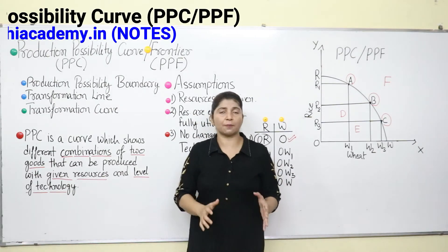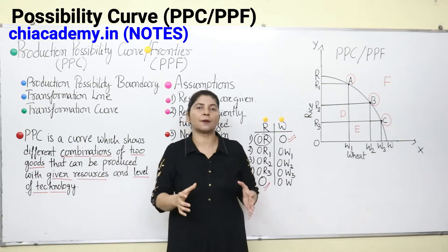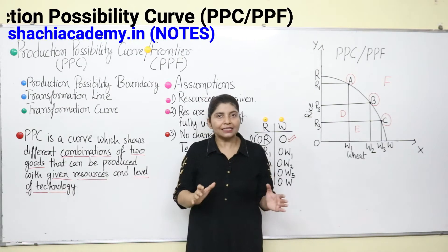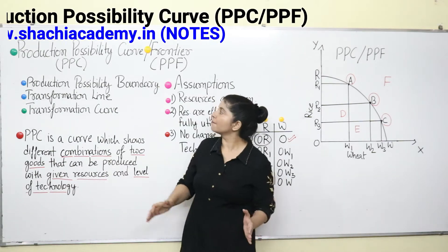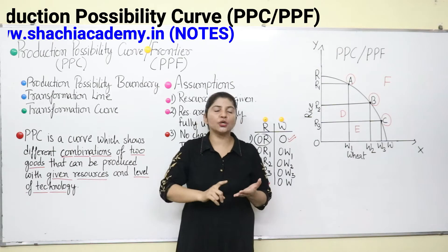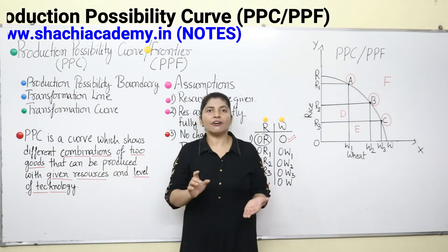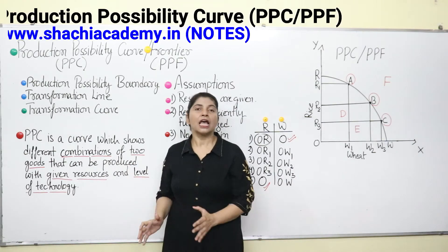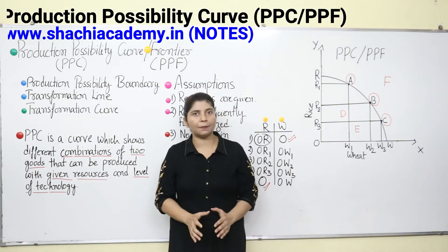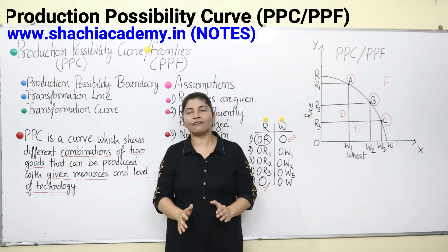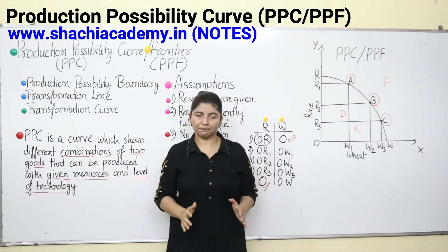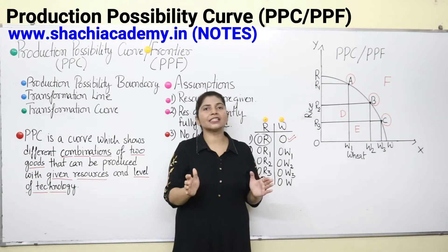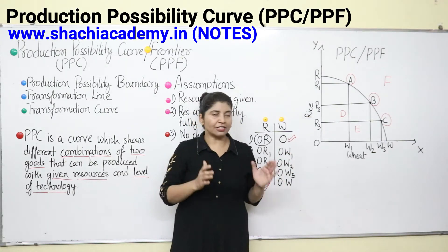Let's start with the definition, but before that we need to have a general understanding of Production Possibility Curve. As the term shows — Production Possibility — that means whatever production is possible in any economy, representing the possible production using all its resources and level of technology. For example, India has a certain level of technology and resources like land, labour, capital, entrepreneur, etc. Using all these resources, whatever production is possible can be represented with the help of Production Possibility Curve. But for the sake of simplicity, we take only two commodities, because more than two commodities can't be represented on the two axes of the curve.